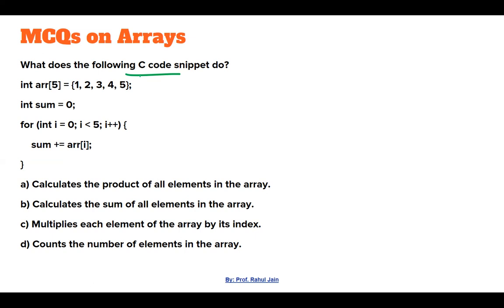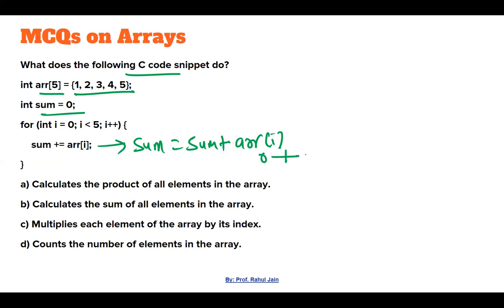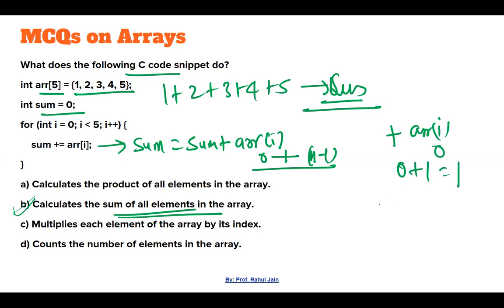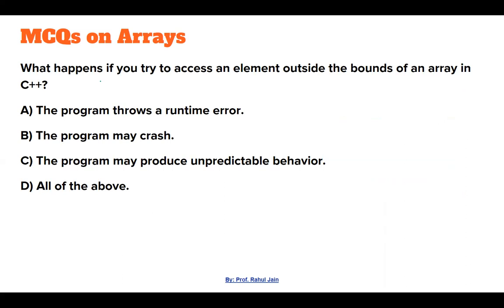The next question asks what the following C code snippet does. We have an array of 5 elements. We initialize sum to 0 and loop from i=0 to n-1, adding array[i] to sum each time. This calculates 1+2+3+4+5, giving the sum of all elements of the array. So option B is the correct answer.